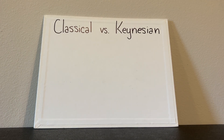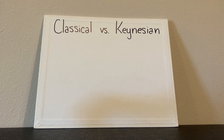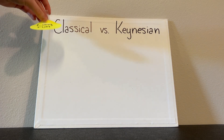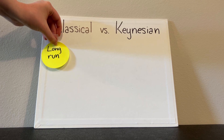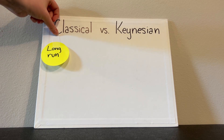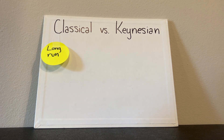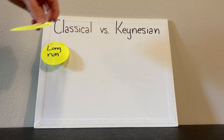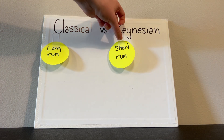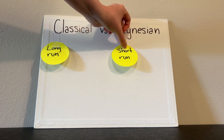Today I'm going to help you remember the differences between classical and Keynesian economics. The time period for classical is long run, whereas the time period for Keynesian is short run.